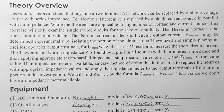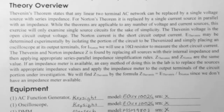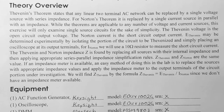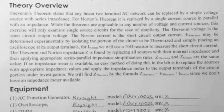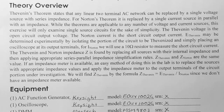Keep in mind that Z Thevenin and Z Norton are the same value. We don't have impedance meters in our labs at the moment, but if we did, we could use them to determine the equivalent impedance. In this lab we will find Z Thevenin by the formula Z Thevenin equals E Thevenin divided by I Norton, since we don't have an impedance meter available.